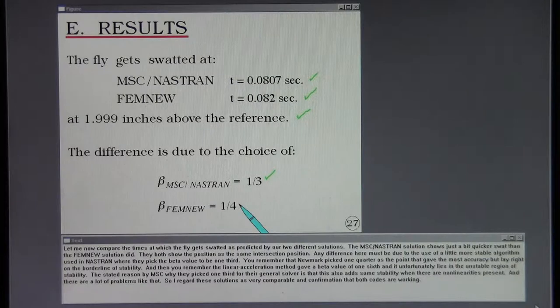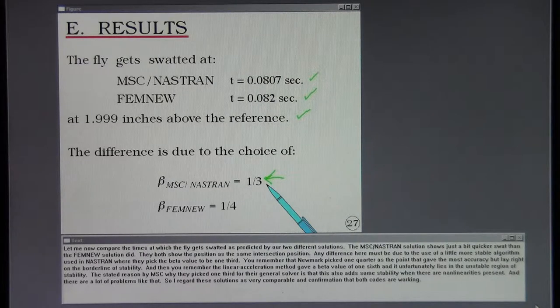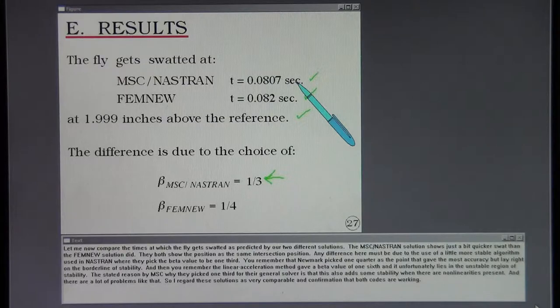You remember that Newmark picked one-quarter as the point that gave the most accuracy but lay right on the borderline of stability. The linear acceleration method gave a beta value of one-sixth and it unfortunately lies in the unstable region. The stated reason by MSC why they pick one-third for their general solver is that this also adds some stability when there are non-linearities present. So I regard these solutions as very comparable and confirmation that both codes are working.